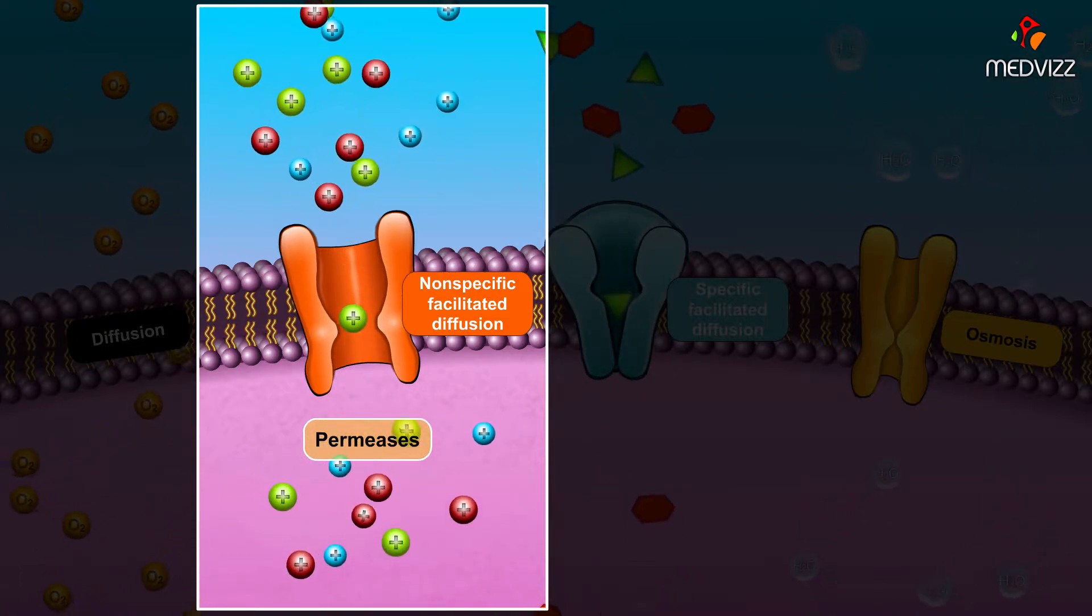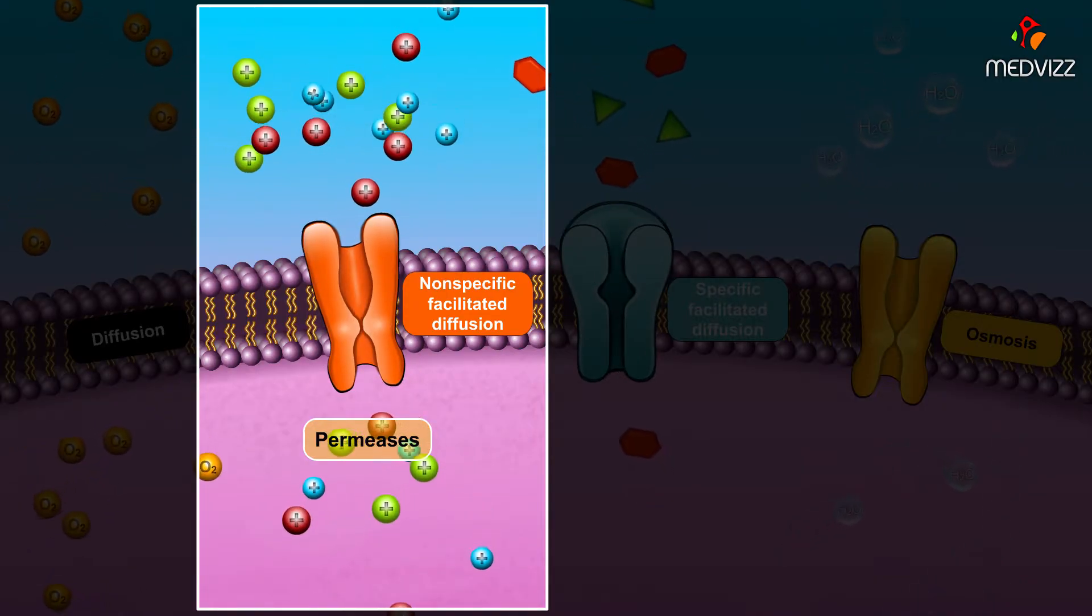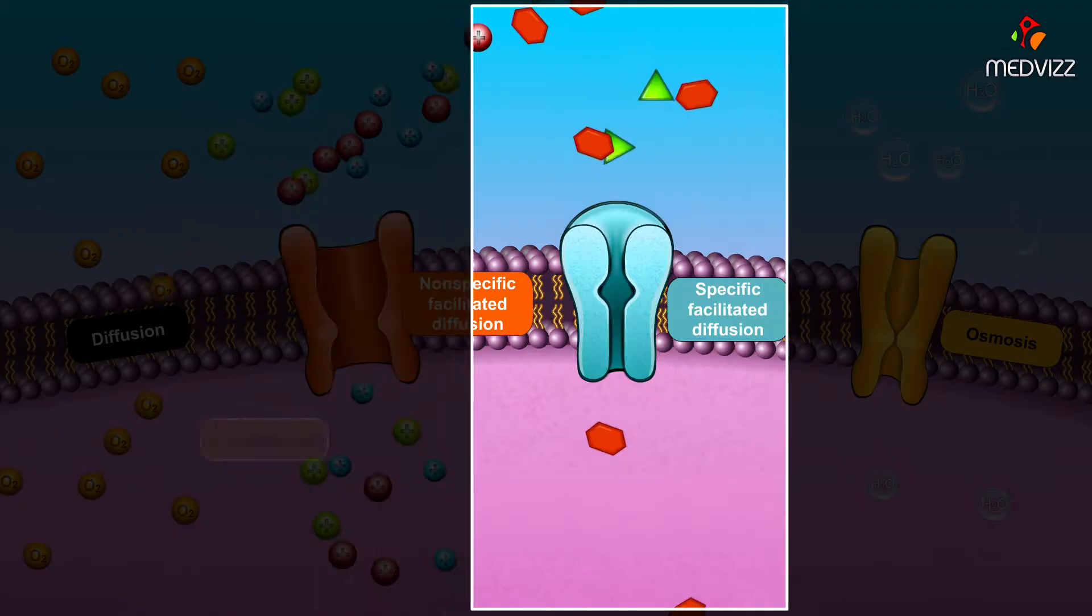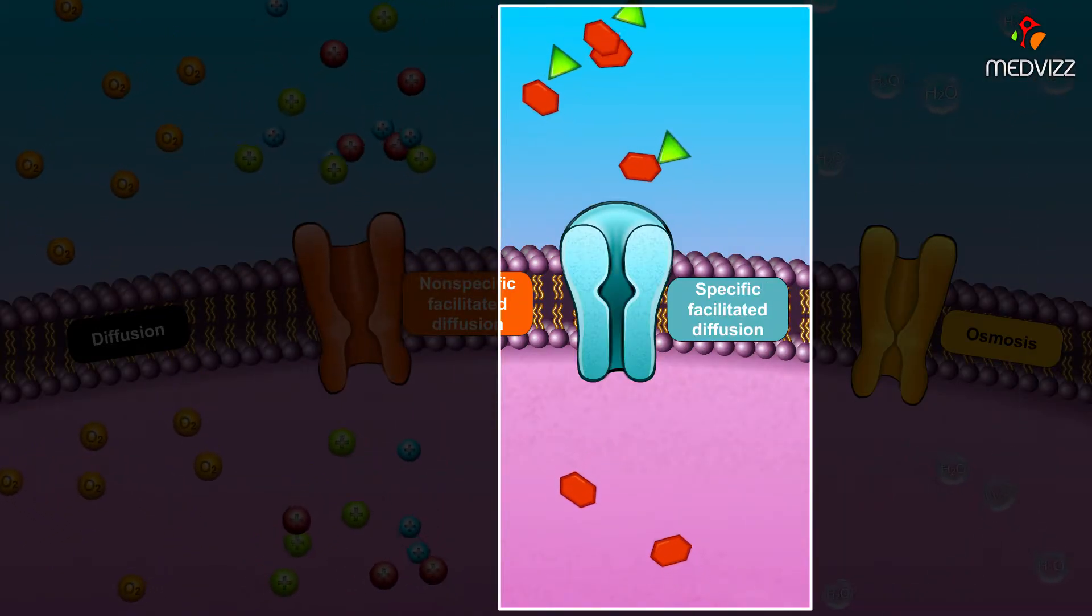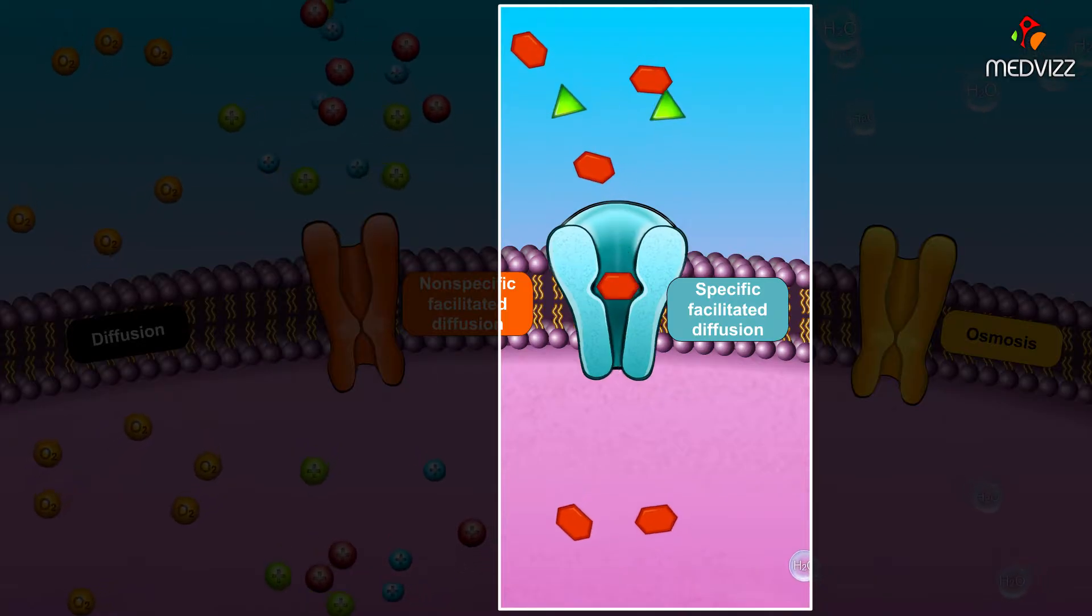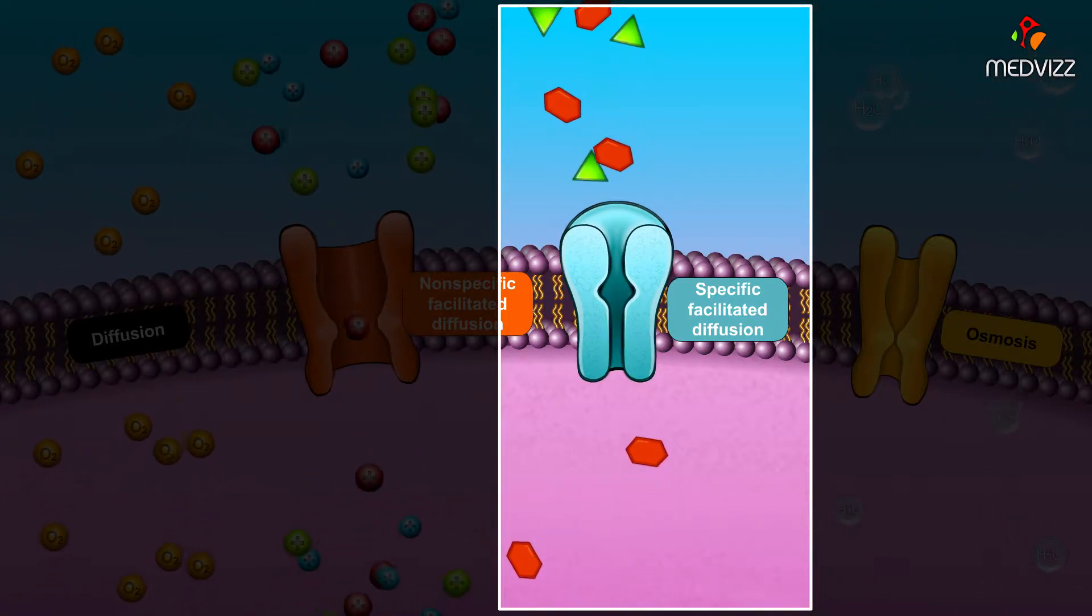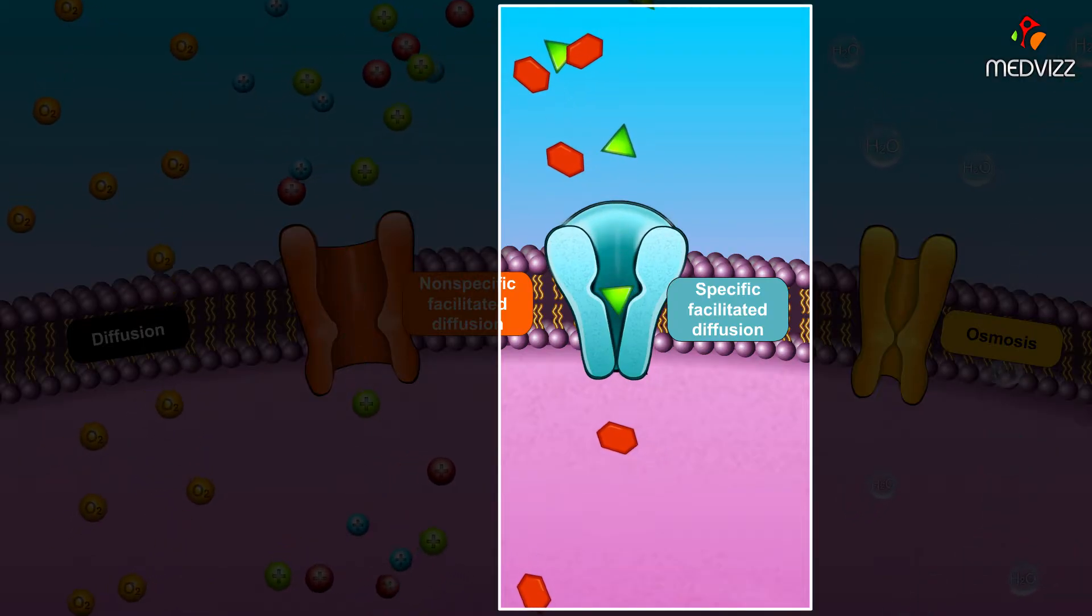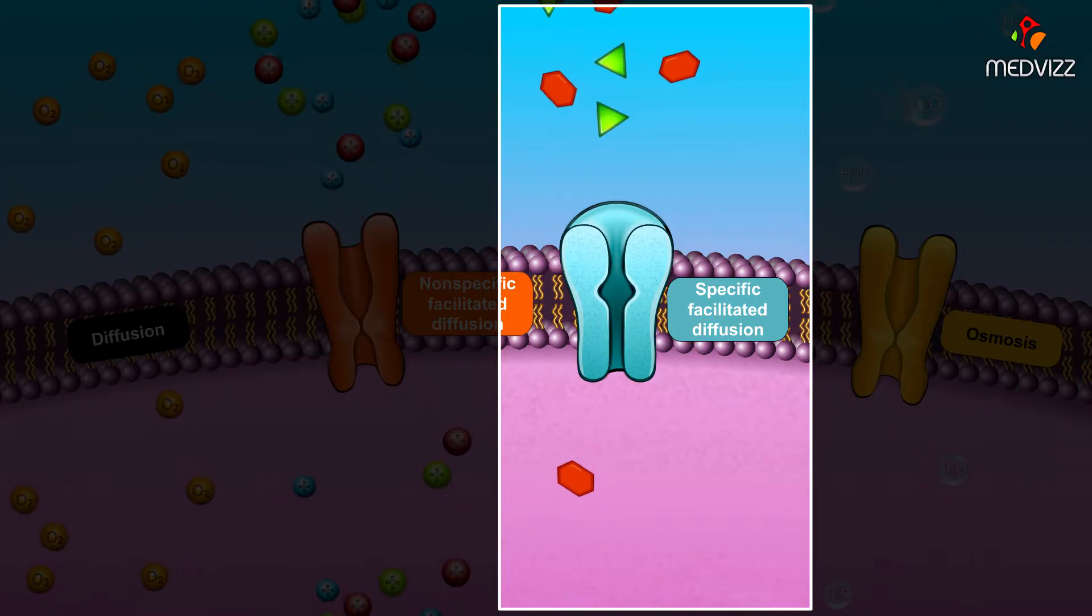Some facilitated diffusion is passive transport allowed by transmembrane proteins called permeases. In the case of specific facilitated diffusion, these permeases only allow specific types of molecules to pass through their channel. The channel contains a recognition element. If the molecule is not recognized, the channel will not open to allow the molecule to pass into the cell.